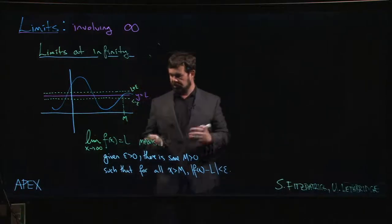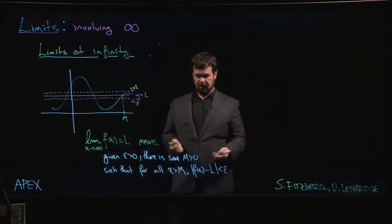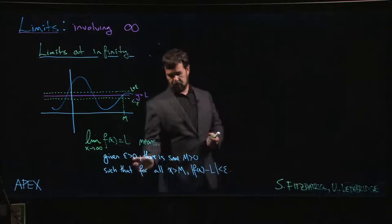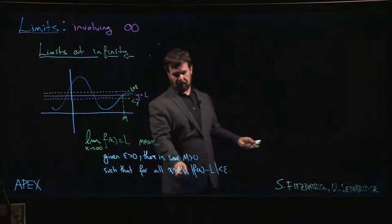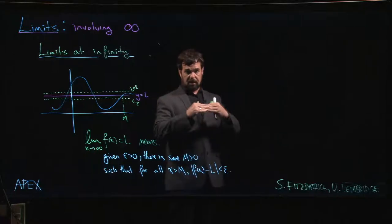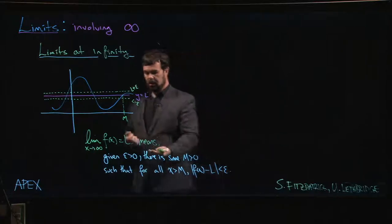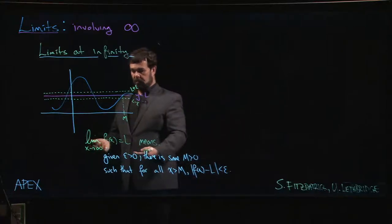So this is what it means to have a limit at infinity. You can always find this m so that for every x value bigger than that m, the distance between f of x and L will be less than your epsilon.